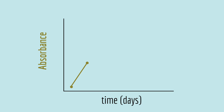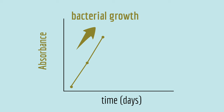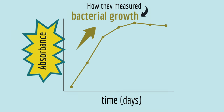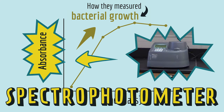To do that, the scientists showed that in the lab over several days, the bacteria grew in number, and higher numbers of bacteria correlated with higher degradation of Quinclorac. How they measured bacterial growth was with a spectrophotometer.